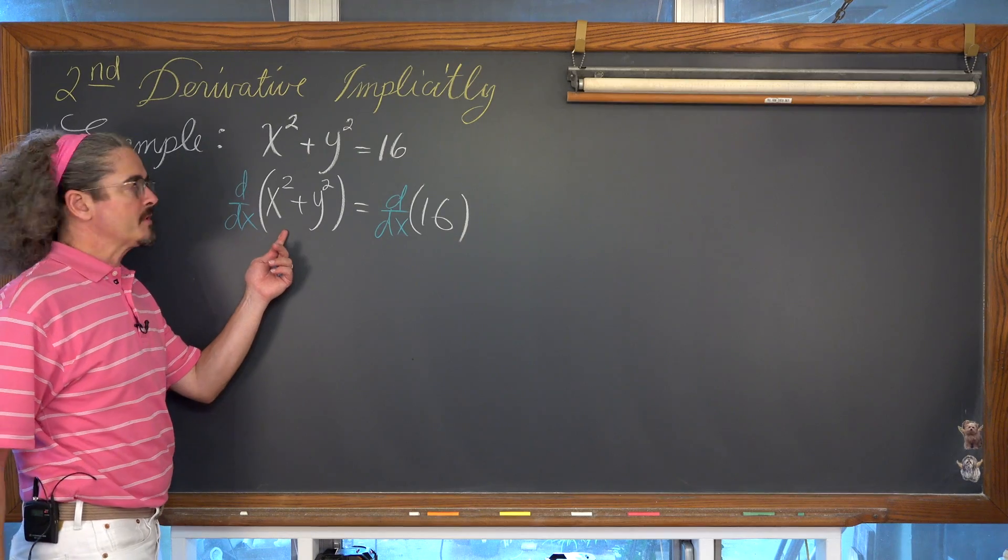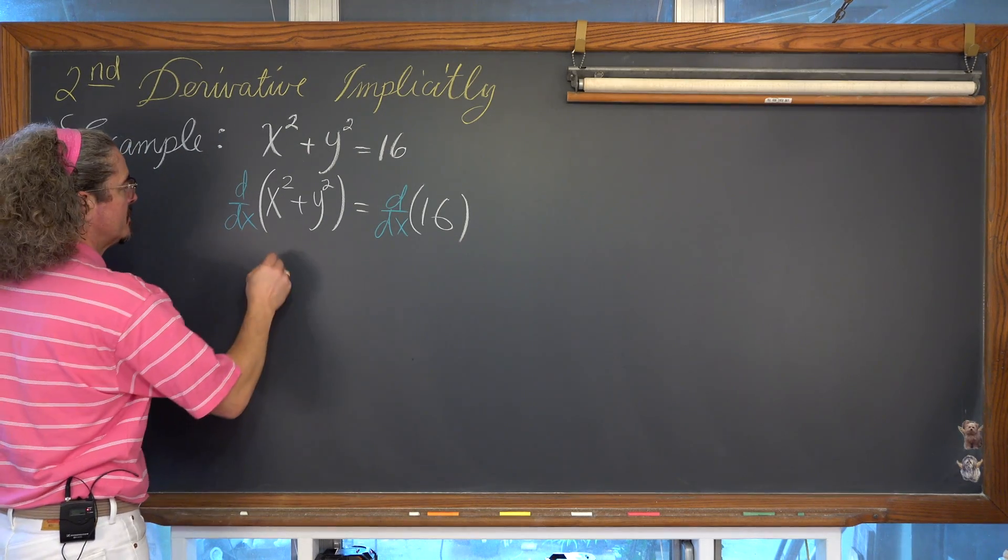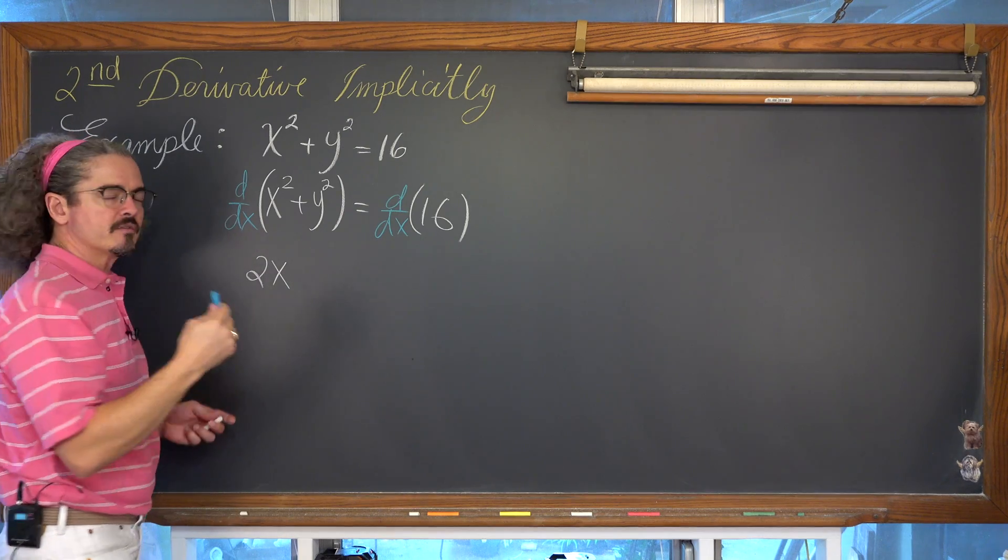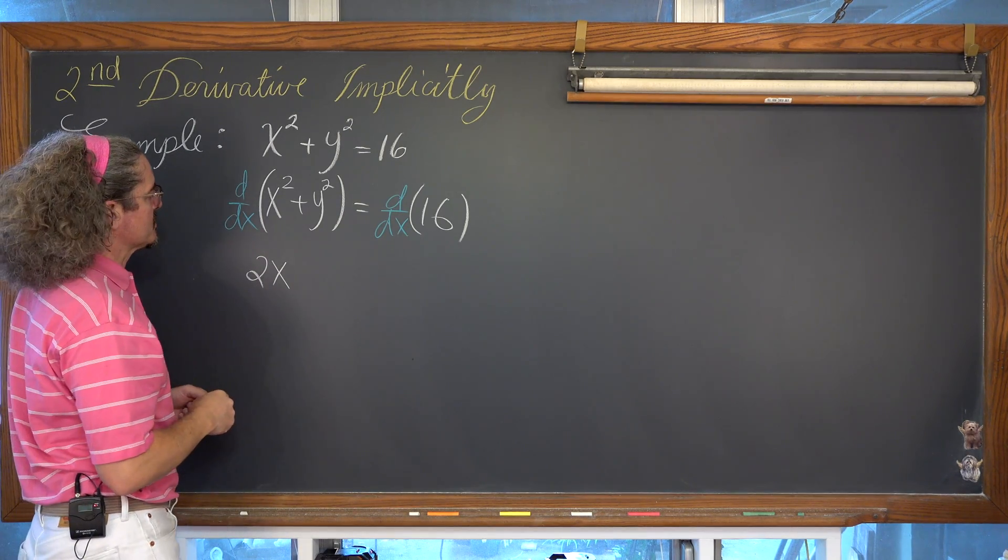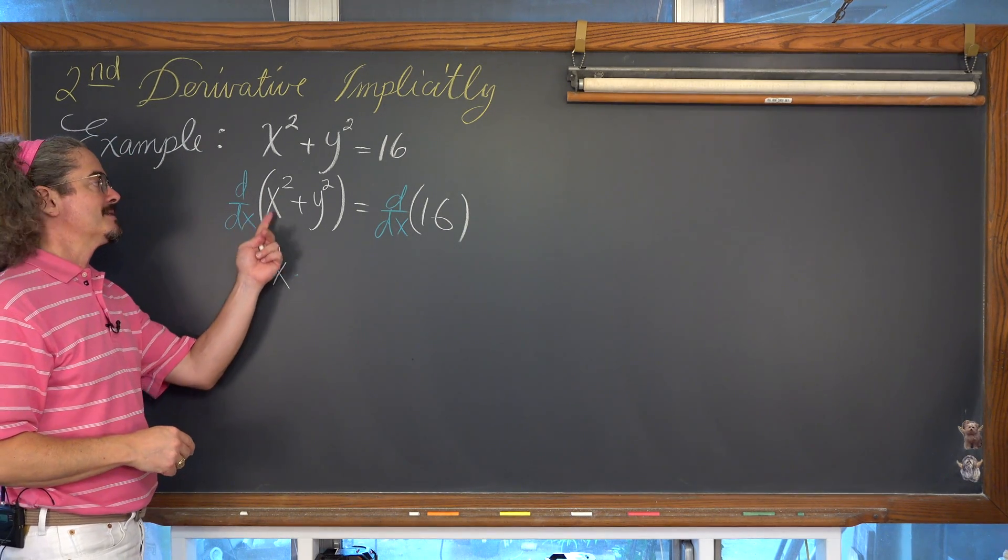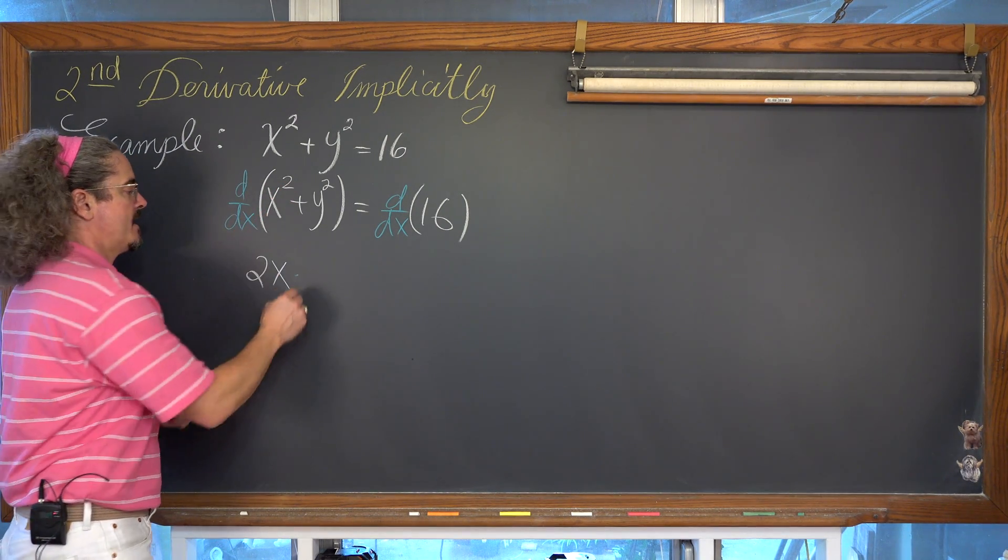The derivative of x squared with respect to x is going to be bring the power down, reduce the power by 1. And I'm going to go ahead and show the chain rule for every single term here, even though in this case, like with the derivative of the inside function, what's inside the power of 2, which is x.